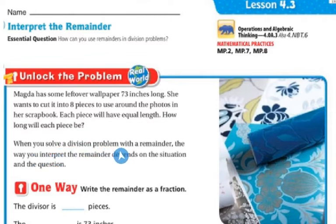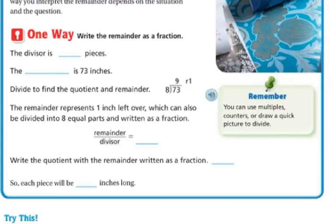When you solve a division problem with a remainder, the way you interpret the remainder depends on the situation and the question. So one way is you can write the remainder as a fraction. The divisor is, and in this case the divisor is eight pieces, and then 73 inches is our dividend.